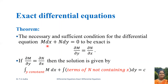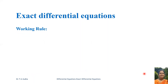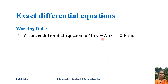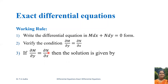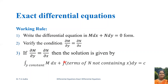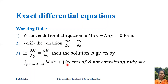If the given differential equation M dx plus N dy equal to 0 is exact — that is, the partial derivative ∂M/∂y equals ∂N/∂x — then the solution is given by integral M dx where y is constant, plus integral of terms of N not containing x, times dy, equal to c. The working rule is: write the given equation in the form M dx plus N dy equal to 0, verify the condition ∂M/∂y equal to ∂N/∂x, and if satisfied, apply the solution formula.